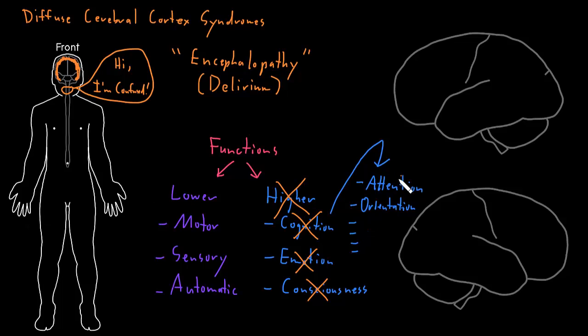But abnormalities of these higher functions, and these cognitive functions in particular, are very common, whereas abnormalities of the lower functions are fairly uncommon, with many kinds of syndromes that involve diffuse cerebral cortical dysfunction.